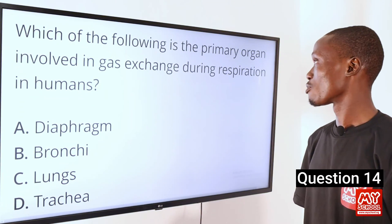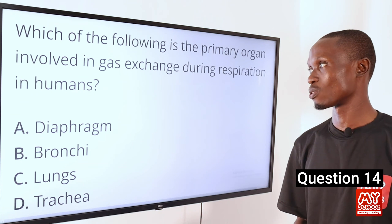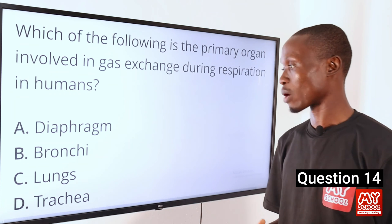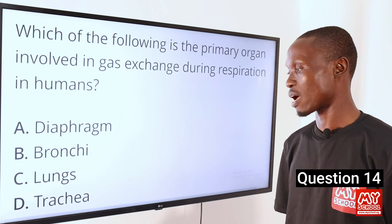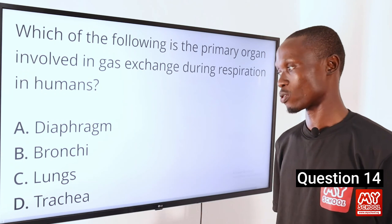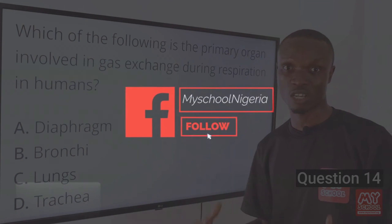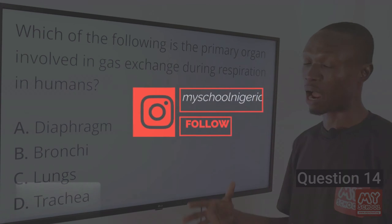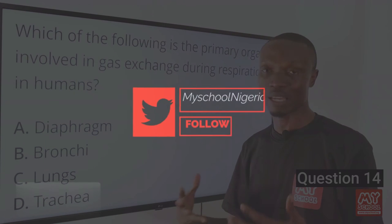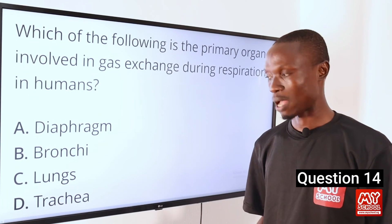Question 14. Which of the following is the primary organ involved in gas exchange during respiration in humans? A, diaphragm. B, bronchi. C, lungs. D, trachea. The answer is option C, lungs. The lungs are a pair of respiratory organs located in the chest cavity, and they are responsible for gaseous exchange in humans.